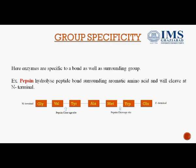Group specificity: here, enzymes are specific to a bond as well as the surrounding group of atoms. For example, pepsin hydrolyses peptide bonds surrounding aromatic amino acids and will cleave at the N-terminal. Pepsin is the digestive enzyme of the stomach, produced by the chief cells. As we can see in this polypeptide chain, tyrosine and tryptophan are aromatic amino acids, so pepsin will recognize the peptide bond as well as the surrounding group and cleave at the N-terminal.